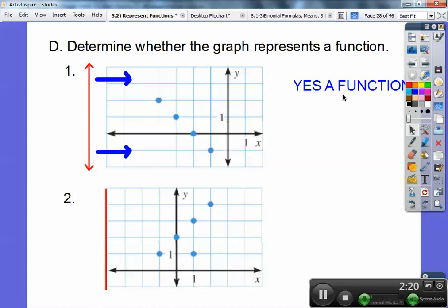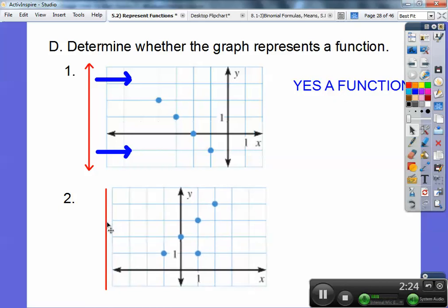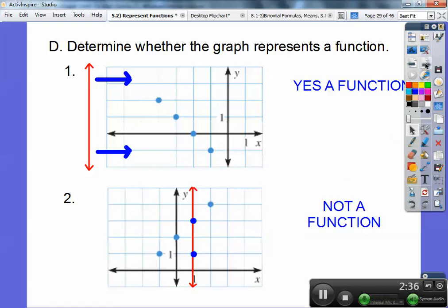How about this one? Here's this graph right here. I'm going to slide this line through. It intersects it in one spot there, one spot there. Uh-oh, right there, it intersects it in two spots. So when it intersects it in more than one spot, then we say no, it is not a function. It's a relation, it's just not a function.